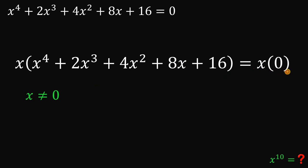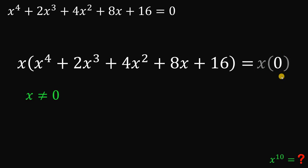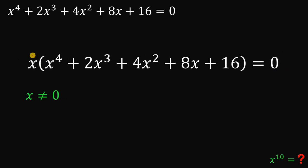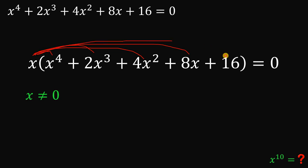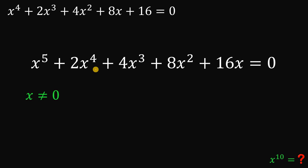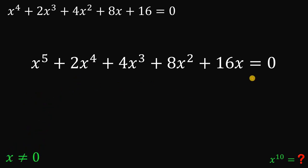Since x is not equal to 0, x times 0 equals 0. Distributing x across x to the fourth power, 2x cubed, 4x squared, 8x, and 16, we get x raised to the fifth power plus 2x raised to the fourth power plus 4x cubed plus 8x squared plus 16x. Now let's focus on this result.